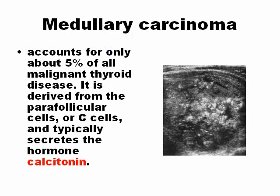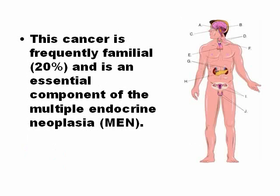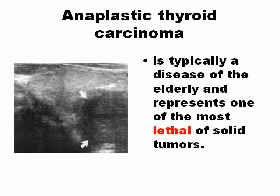Medullary carcinoma accounts for only 5% of thyroid cancers but is a malignant disease. It does not arise from follicular cells; instead it develops from the cells that produce calcitonin, called parafollicular cells. This cancer is frequently familial and is one component of multiple endocrine neoplasia, or MEN, a familial disease.